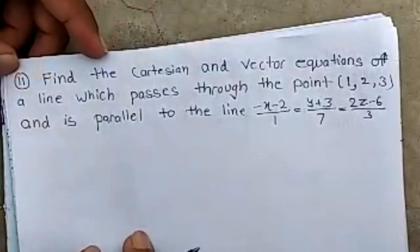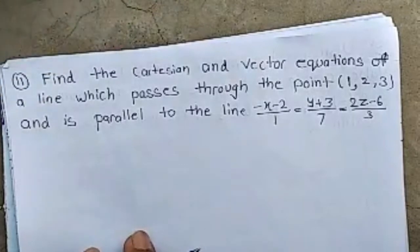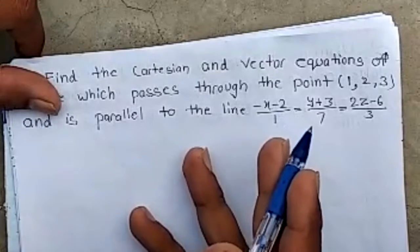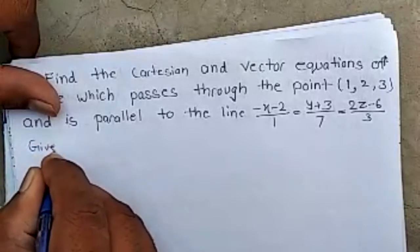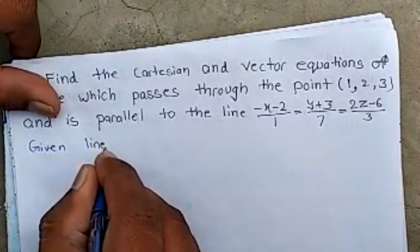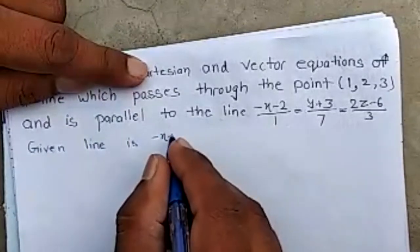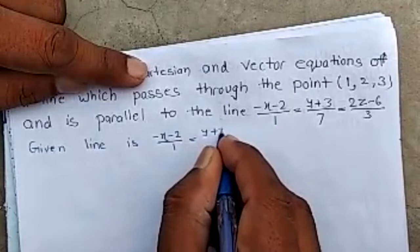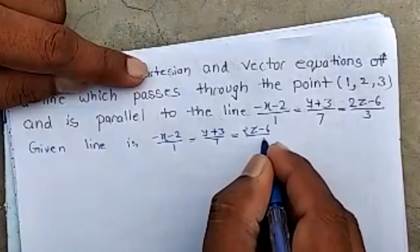Question number 11: Find the Cartesian and vector equation of a line which passes through the point (1, 2, 3) and is parallel to the line: (−x − 2)/1 = (y + 3)/7 = (z − 6)/3. Given line is (−x − 2)/1 = (y + 3)/7 = (z − 6)/3.